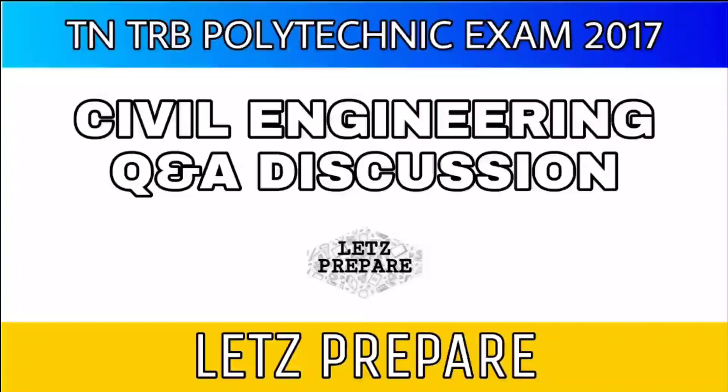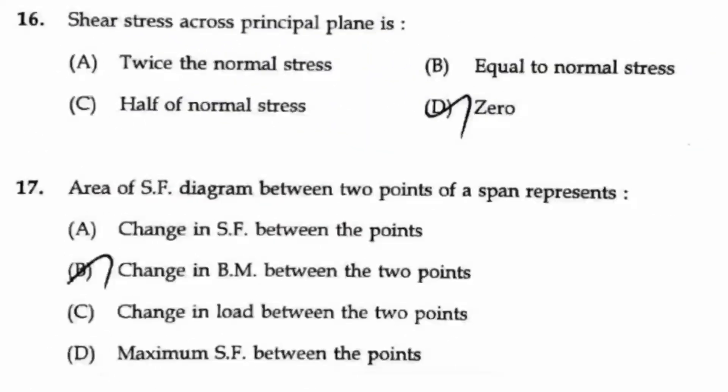Let us prepare for the TRB Polytechnic Exam 2017 Civil Engineering question paper. Question number 16: Shear stress across the principal plane is? Across the principal plane, the shear stress will always be zero only, so option D is the right answer.